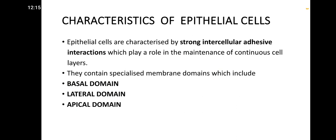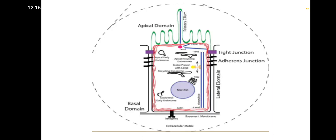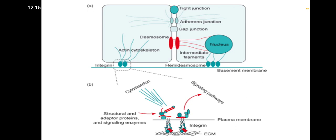Epithelial cells are characterized by strong intercellular adhesive interactions, which play a role in the maintenance of continuous cell layers. They contain specialized membrane domains including the basal domain, lateral domain, and apical domain, which maintain these strong intercellular adhesive interactions.